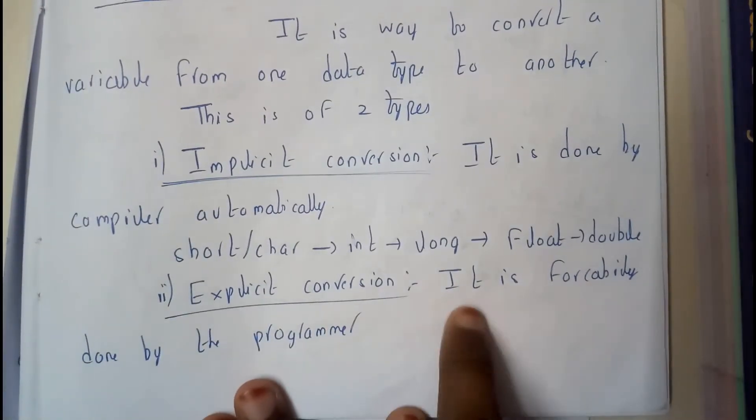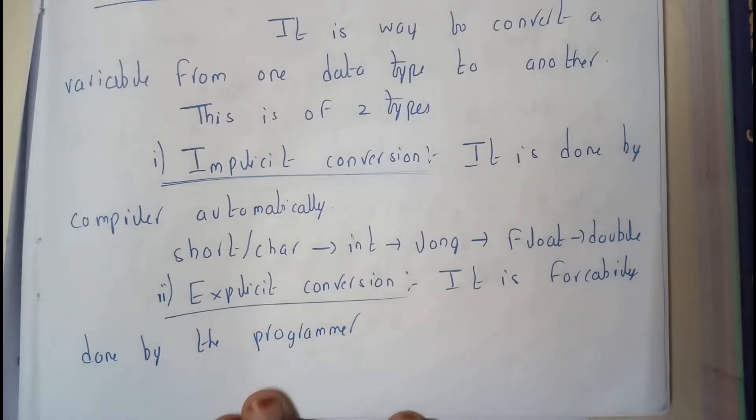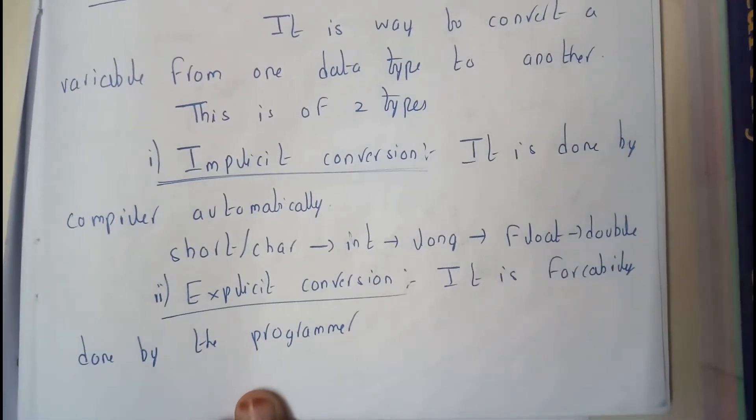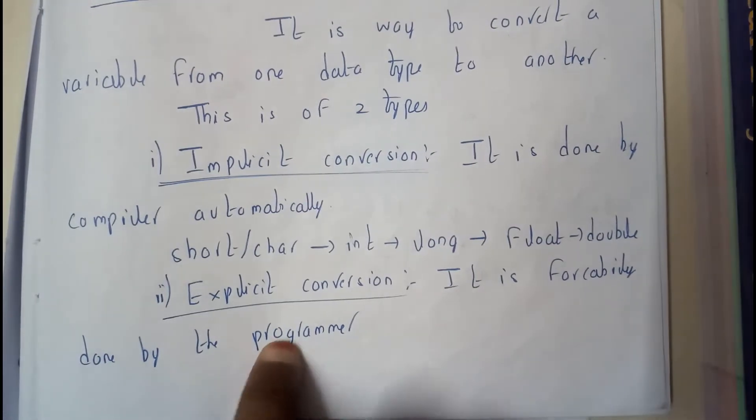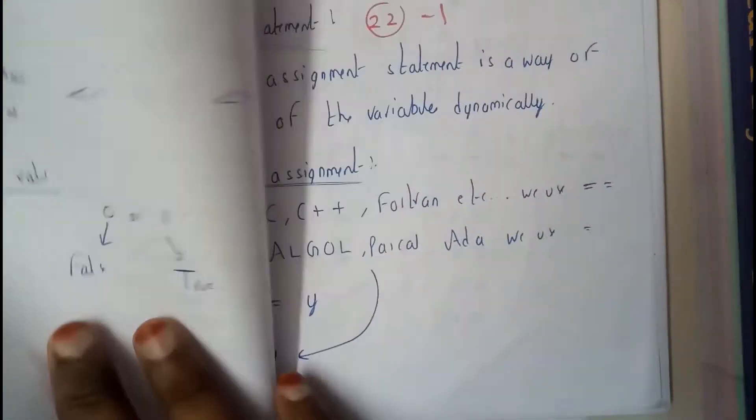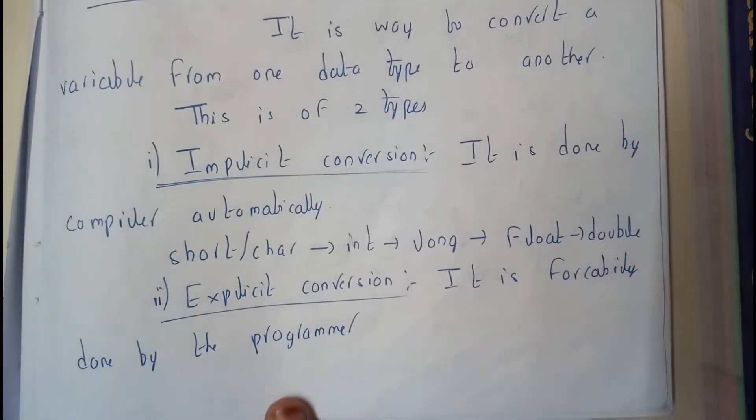So explicit conversion is forcibly done by the programmer. This we will be observing mostly in Java. As we use Java, we will be seeing this explicit conversion a lot.